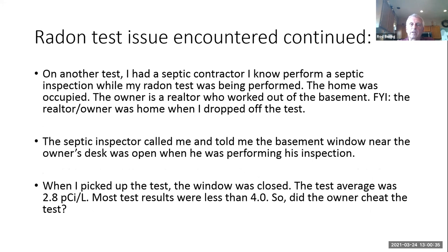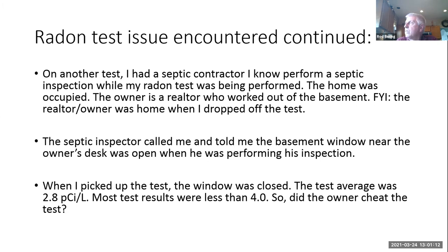On another test, I had a septic inspector I hired to do the septic inspection. My radon test was in operation when he was there. The homeowner was home — by the way, the owner is a realtor, a part-time realtor working in the basement. My septic inspector called me as he walked out of the house and said, 'Hey dude, basement windows were open right by the guy's desk' — now that's 15 feet away from my monitor. I went back to pick up the radon test the next day and every window in the house was closed. The test result was 2.8. Did this owner cheat? How do I address this? How do I intelligently act upon my findings to present the information to my customer?